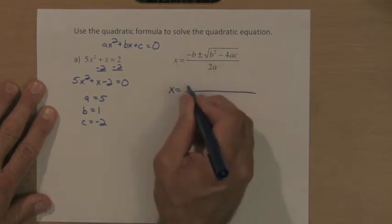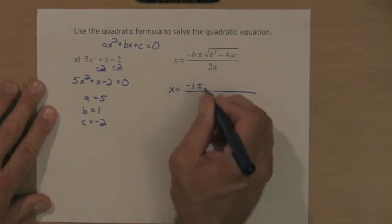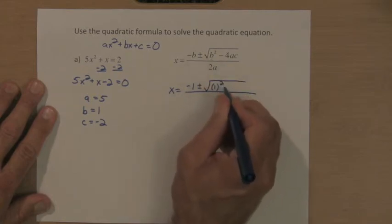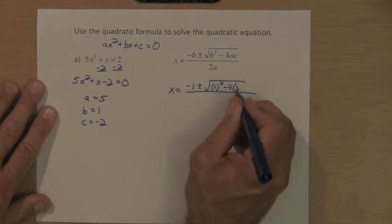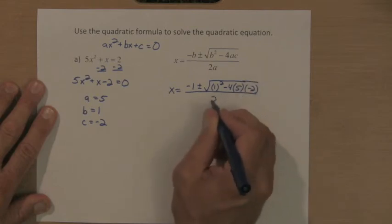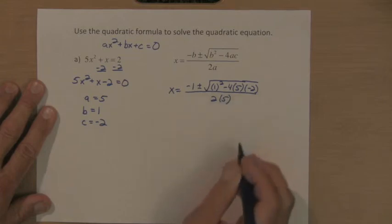The opposite of b is a negative 1, the square root, b squared. Our value of b is 1, so it's 1 squared minus four times a, a is 5, c is negative 2. And my denominator is two times a, a is a 5, so it's two times 5.